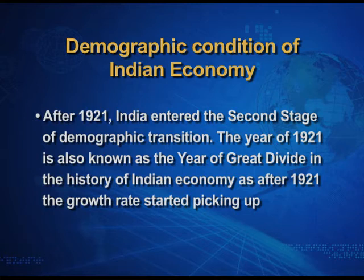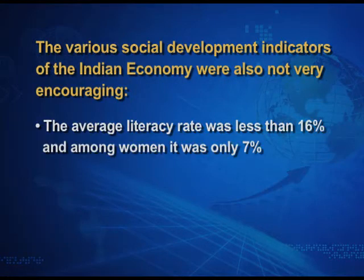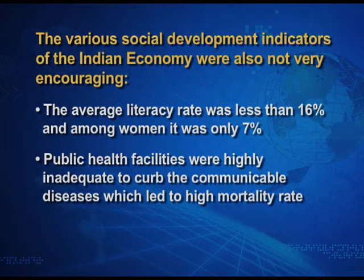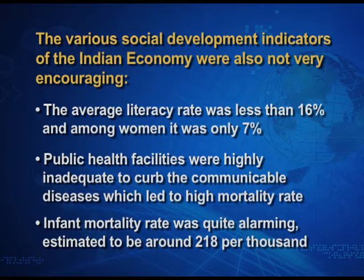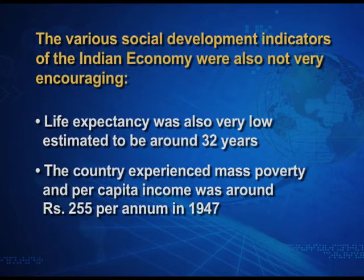After 1921, the growth rate of population started picking up. The various social development indicators of the Indian economy were also not very encouraging. The average literacy rate was less than 16%, and among women it was only 7%. Public health care facilities were highly inadequate to curb communicable diseases, which led to a high mortality rate. The infant mortality rate was quite alarming, estimated to be around 218 per thousand. Life expectancy was also very low, estimated to be around only 32 years. The country experienced mass poverty and per capita income was around ₹255 per annum in the year 1947.